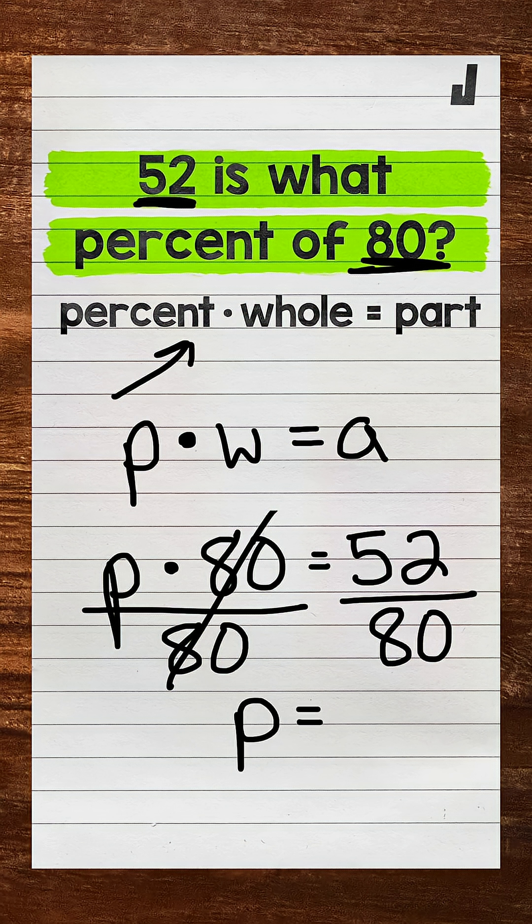P equals, and then on the right side, 52 divided by 80 gives us 0.65, 65 hundredths. Now that percent is in decimal form.